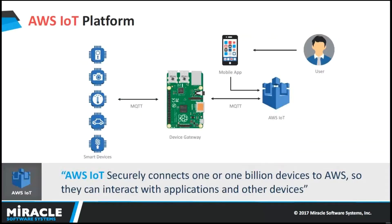IoT is a trending technology responsible for communication between sensors to sensors, sensors to devices, and devices to devices. There are millions and billions of devices and sensors communicating with each other using one IoT platform or another. AWS IoT is also a booming platform responsible for communication between sensors to devices, or devices to platforms.